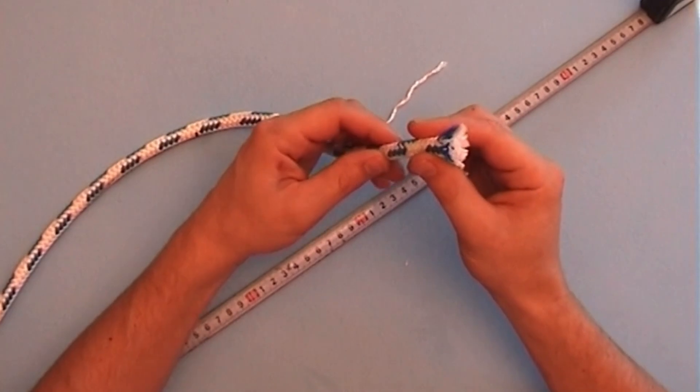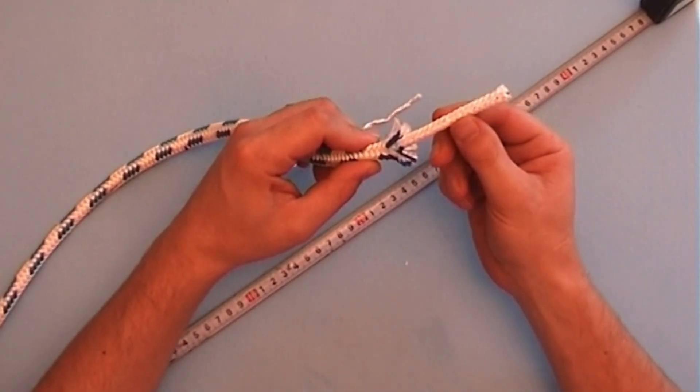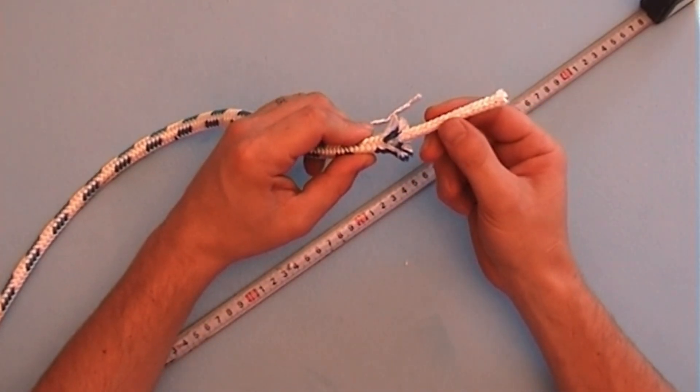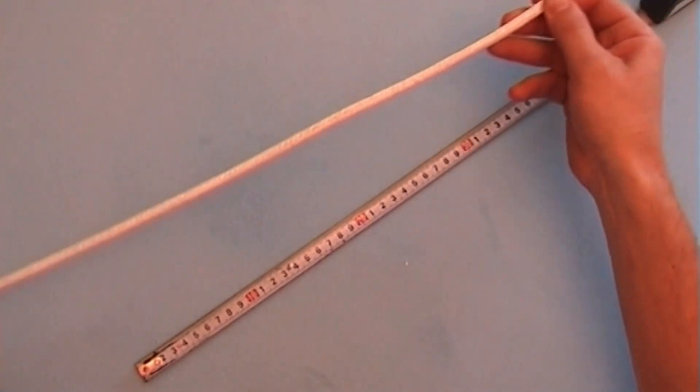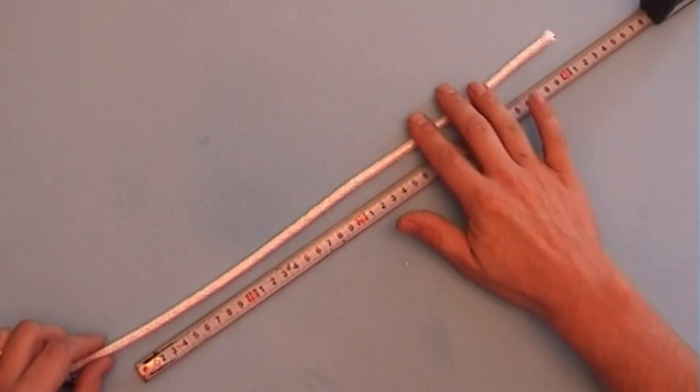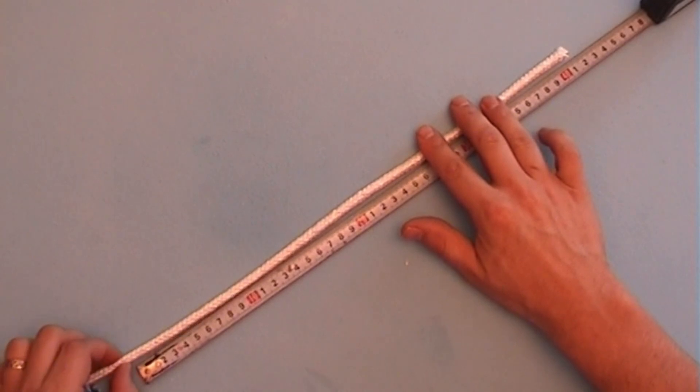Parallel core rope usually has an inter-sheath, like a second cover around the core. Remove this inter-sheath for the entire distance of the splice, namely these 41 cm or 16 inches.